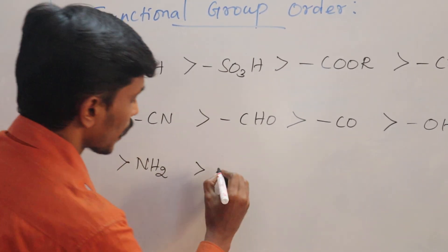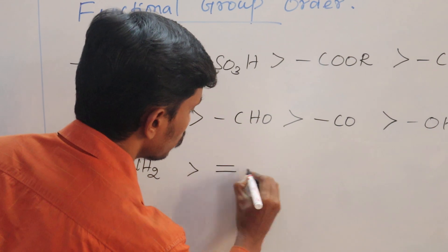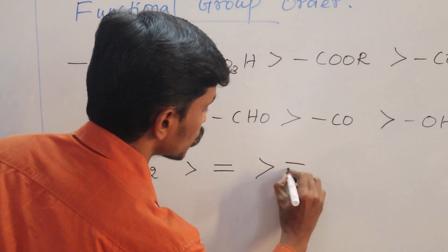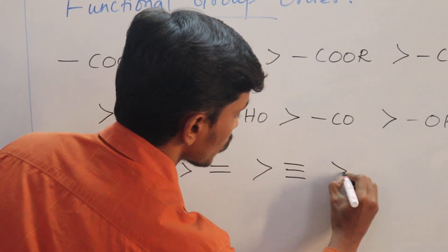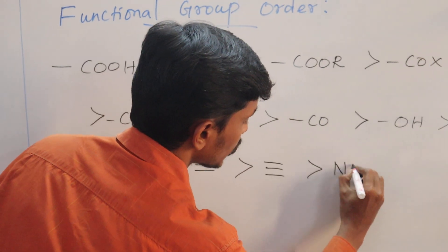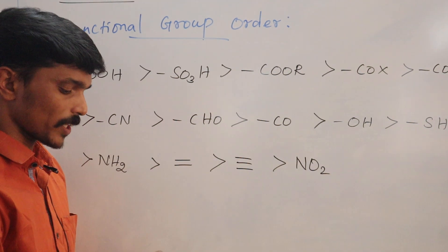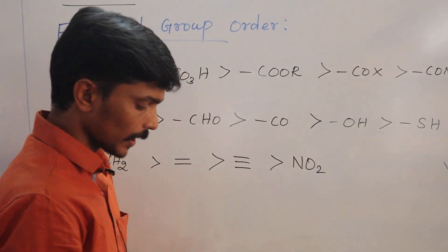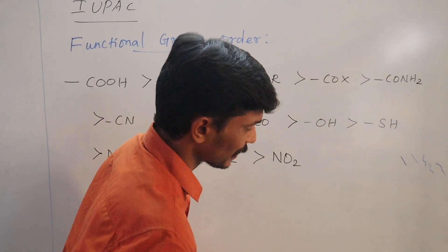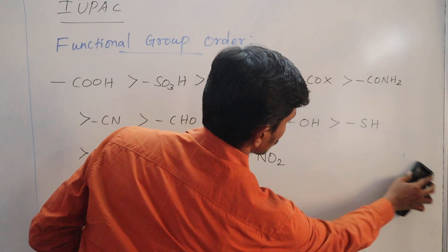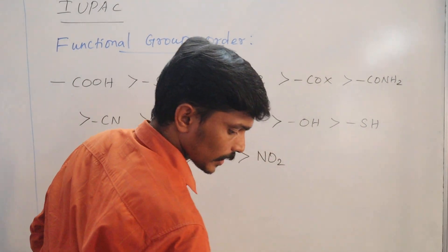Ketone is followed by Alcohol, Alcohol by Thiol, Thiol by Amine, then Double bond, Triple bond, and after that NO2. So if you look at all these, let's discuss these groups in priority order.